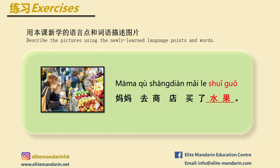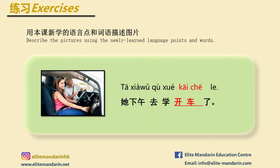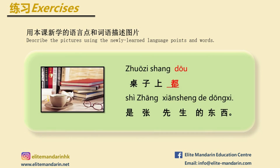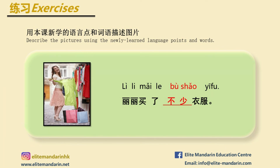Let's check the answers together. 王芳的朋友买了水果。 妈妈去商店买了水果。 桌子上都是张先生的东西 — All items on the table are Mr. Zhang's. Lily bought a lot of clothes.